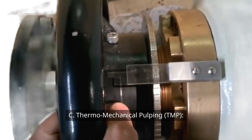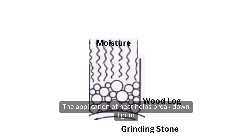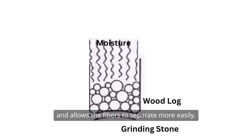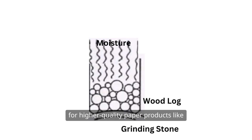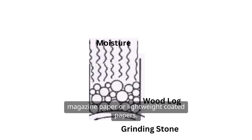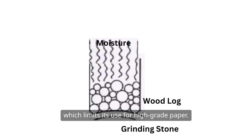C: Thermomechanical Pulping (TMP). Method: in this process, wood chips are first softened by steam before being ground between the refiner discs. The application of heat helps break down lignin and allows the fibres to separate more easily. Advantages: TMP pulp has better strength properties and can be used for higher quality paper products like magazine paper or lightweight coated papers. Disadvantages: still requires significant energy and the lignin content remains high, which limits its use for high-grade paper.